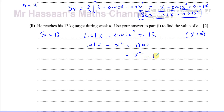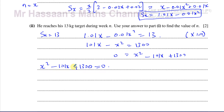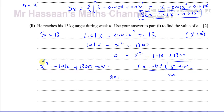We have to solve X squared minus 101X plus 1300 equals 0. I don't think it factorizes, so I'll use the quadratic formula. In these questions you need to show your steps — you can't just write the answers down or you'll lose marks. You have to show the method. So: a equals 1, b equals negative 101, c equals 1300. X equals minus b plus or minus the square root of b squared minus 4ac, all over 2a.